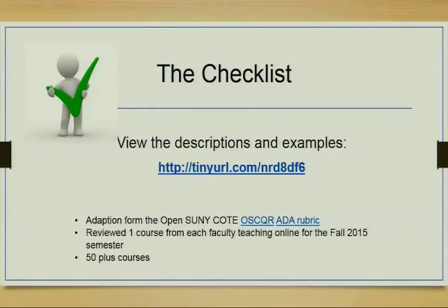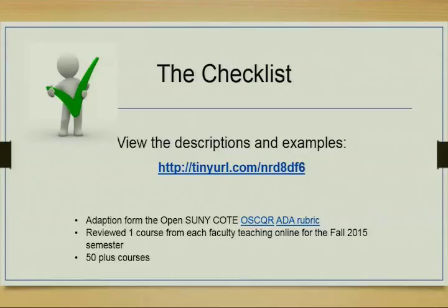We started thinking we could review every course running in fall. We ended up doing about 50-plus courses, and we found that if we did one faculty member's course and then their second course, we'd find the same compliance issues — faculty tend to build their courses similarly. So we moved on by making sure each faculty member teaching in fall had at least one course checked.